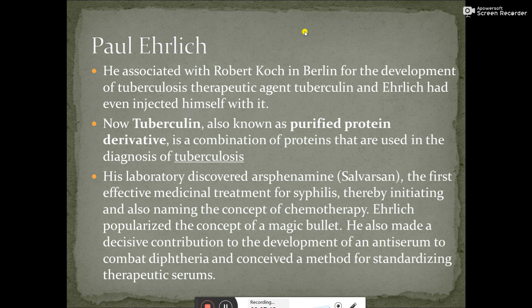Another major contribution of Paul Ehrlich is the discovery of arsphenamine, also called Salvarsan, which was the first effective medical treatment against syphilis. Syphilis is a sexually transmitted venereal disease that was considered a social stigma — people who had it were not considered respectable. Despite this, Paul Ehrlich sought an effective treatment. He found the drug Salvarsan, and through this the concept of chemotherapy was introduced.